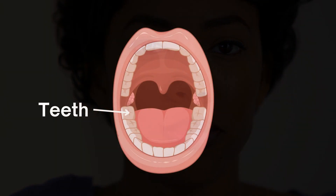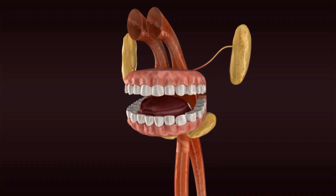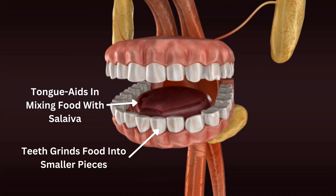Our journey commences in the mouth, where digestion truly begins. Teeth, tongue, and saliva work in harmony to break down food mechanically and chemically. The teeth grind food into smaller pieces, while the tongue aids in mixing food with saliva, which contains enzymes that start the digestion of carbohydrates.